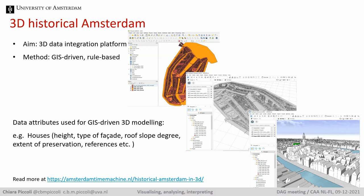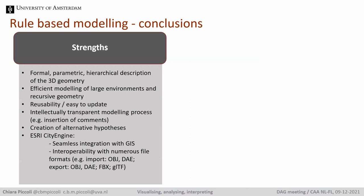To conclude the first part on cities and procedural modeling, let's wrap up with some final considerations. Regarding strong points, rule-based modeling affords a formal, parametric and hierarchical description of 3D geometry and the efficient modeling of large environments and recursive geometry. It's a very good approach to tackle the modeling of a city, ancient or modern. Because they are text-based, rule files or sections of them can be easily reused and adapted in other contexts, as shown with Haliertos. Inline comments can be added as a memory aid for the modeler and to explain choices or reference sources.